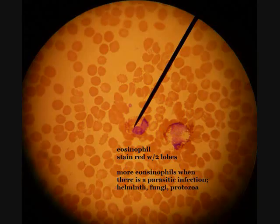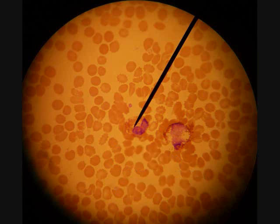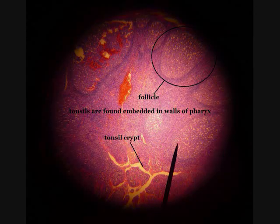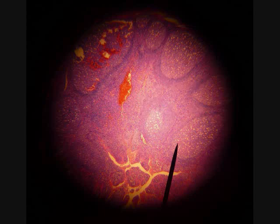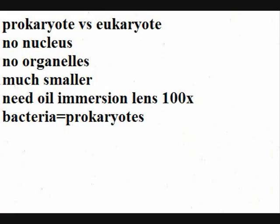Now moving on to acquired immunity. Question one refers to what we looked at in lecture today — refer back to figure 15.15 on page 459. Question two asks you to describe the types of antibodies involved in specific cases, referencing table 15.2 on page 457.